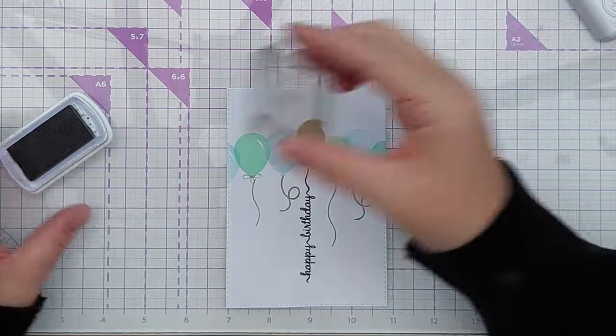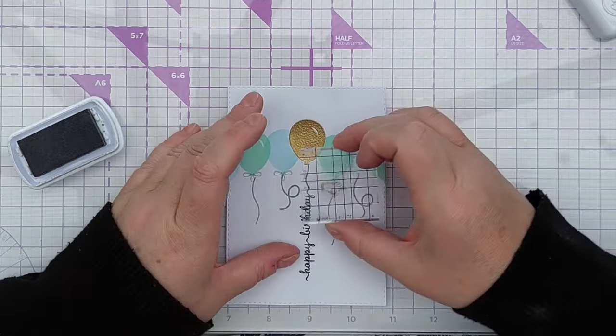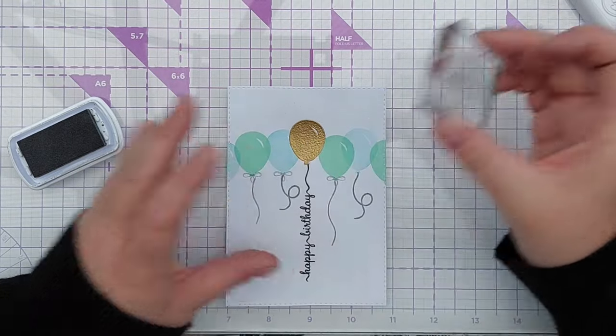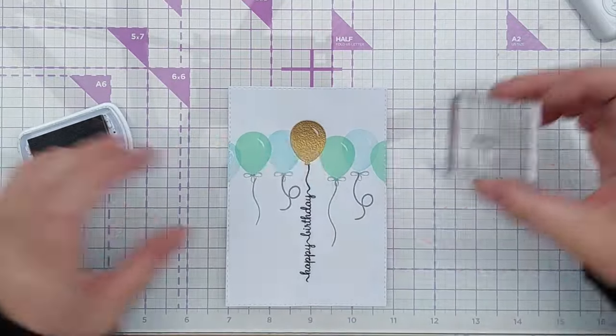Once I'd stamped all the strings, I used a bow stamp to stamp a bow on the knots of the balloons in Pebble ink again, and I also used StazOn to stamp a bow over the gold.